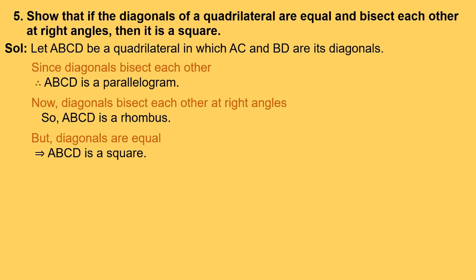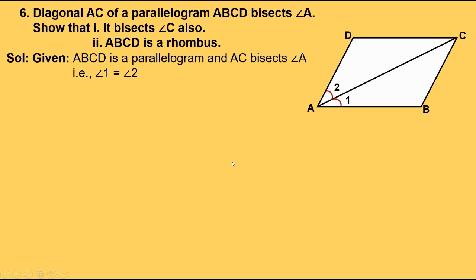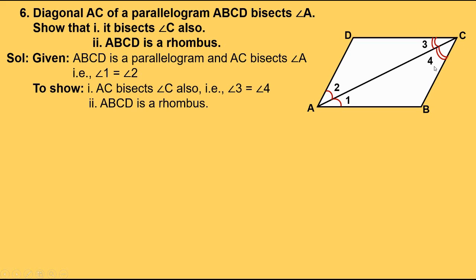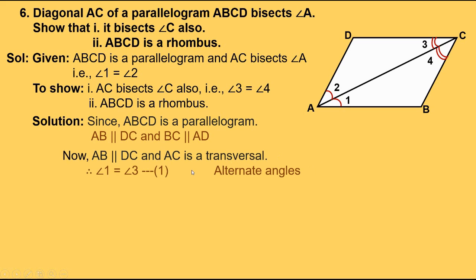Now let's go for the sixth problem. Diagonal AC of parallelogram ABCD bisects angle A. Show that it bisects angle C also and ABCD is a rhombus. Solution: given ABCD is a parallelogram and AC bisects angle A, that is angle 1 equals angle 2. We need to show that AC bisects angle C, that is angle 3 equals angle 4, and ABCD is a rhombus. Since ABCD is a parallelogram, AB is parallel to CD and BC is parallel to AD. Now AB is parallel to DC and AC is the transversal. Therefore angle 1 equals angle 3 — alternate angles are equal. Let's take that as equation 1.